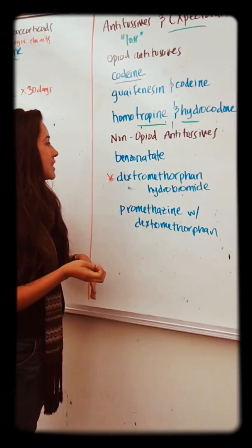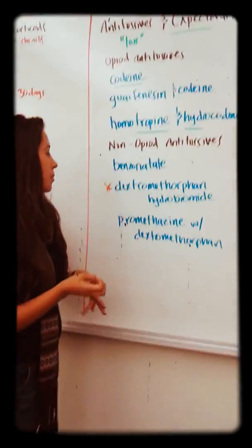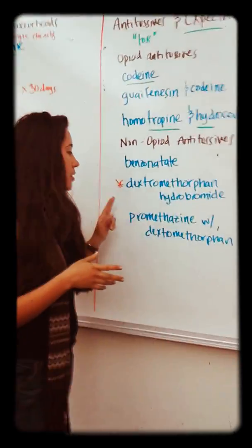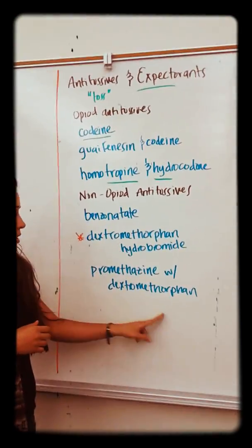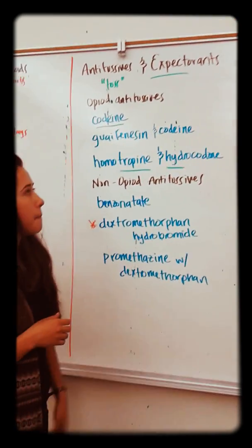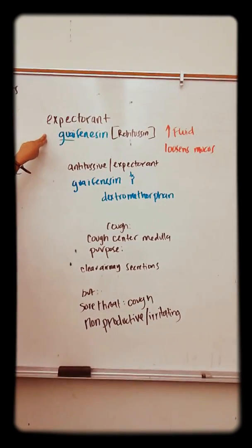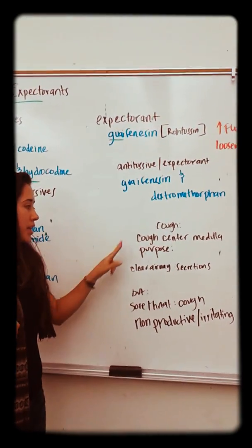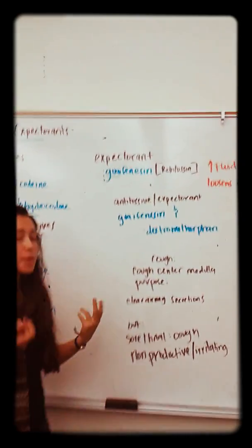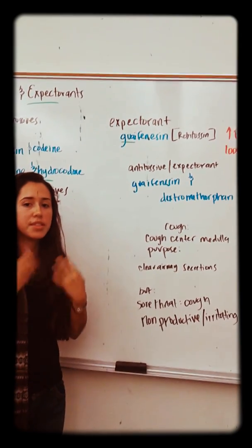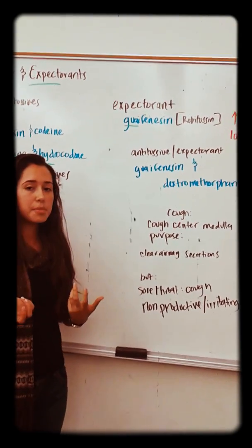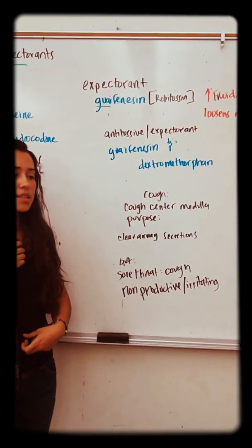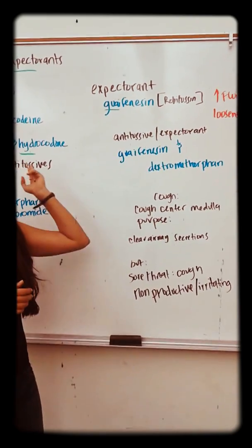Non-opioid antitussives include benzonatate and dextromethorphan hydrobromide — there's a prototype drug chart on that one — and promethazine with dextromethorphan. Remember, coughing originates from the cough center in the medulla and serves a purpose: clearing airway secretions. However, a non-productive cough is irritating and interferes with breathing, which is why we use antitussives.